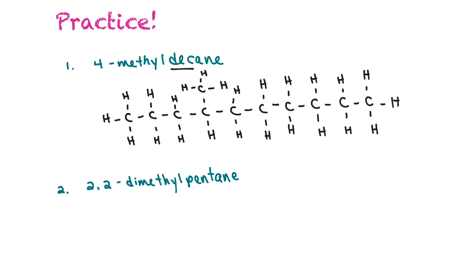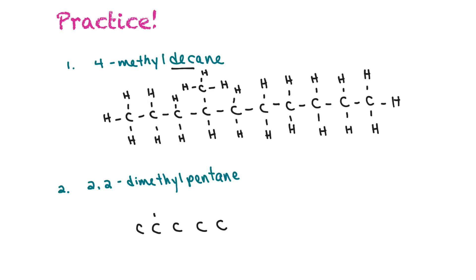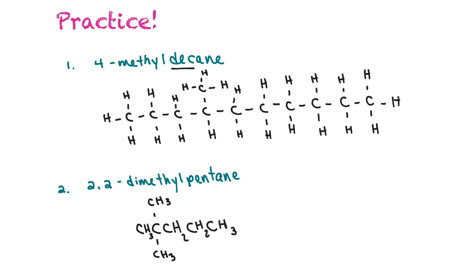The next one we'll draw in collapsed form: 2,2-dimethylpentane. We draw five carbons, and on the second one there are two methyls — CH3 coming off the top and CH3 coming off the bottom. There's no remaining bonding space on that carbon. End carbons are CH3, and the middle ones except for the branched carbon are CH2. And that is how you draw 2,2-dimethylpentane.